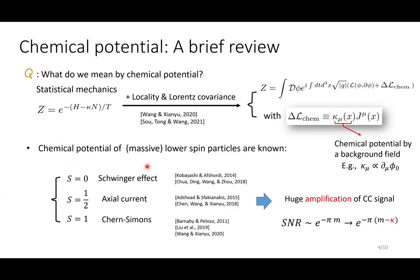The chemical potential of these massive lower spin particles are actually well studied in the literature. For spin 0, this corresponds to the Schwinger effect. Spin 1/2, this is the axial current of the fermion. For spin 1, it corresponds to the Chern-Simons term in the massive Proca field.